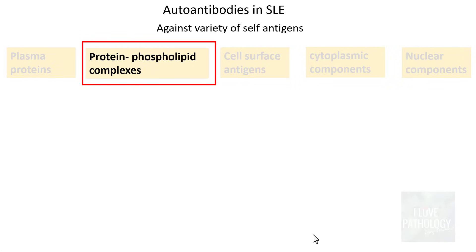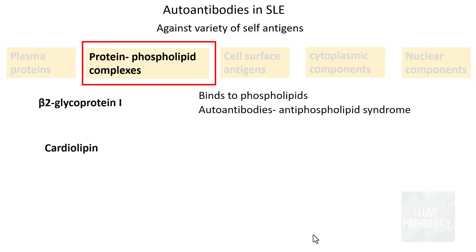The second autoantibody category is protein-phospholipid complexes. Two important proteins that bind to phospholipids are beta-2 glycoprotein 1 and cardiolipin. Autoantibodies against these are referred to as antiphospholipid antibodies, and the resulting condition is antiphospholipid syndrome. These patients predominantly manifest with symptoms of thrombosis and miscarriage, particularly in women of childbearing age during pregnancy.